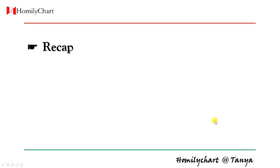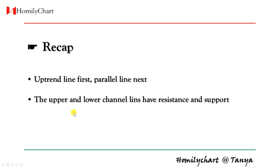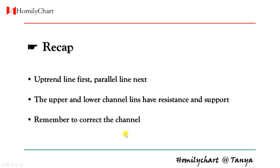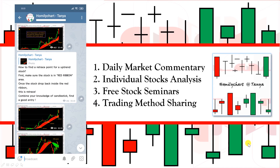Today we learned how to draw an ascending channel. We must remember: uptrend line first, parallel line next. That means we should connect the lows first, not connect the highs. Second, the upper and lower channel lines have resistance and support — the upper line has resistance and the lower line has support. And we need to remember to recreate the channel if the current channel is not effective anymore. If you want to learn more about stock knowledge, welcome to follow my Telegram channel. Thank you.